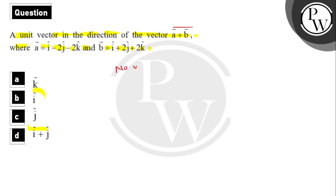So now, we will find vector a plus vector b. Vector a is i-cap minus 2j-cap minus 2k-cap and vector b is i-cap plus 2j-cap plus 2k-cap.